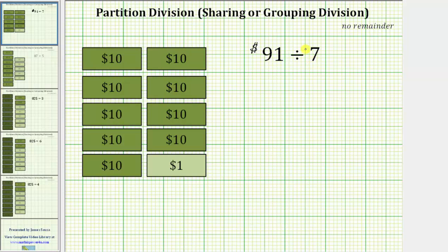We can think of this quotient as having $91 and sharing it equally among seven friends, or having $91 and forming seven groups with each group having the same amount of money. And the $91 consists of nine $10 bills and one $1 bill.